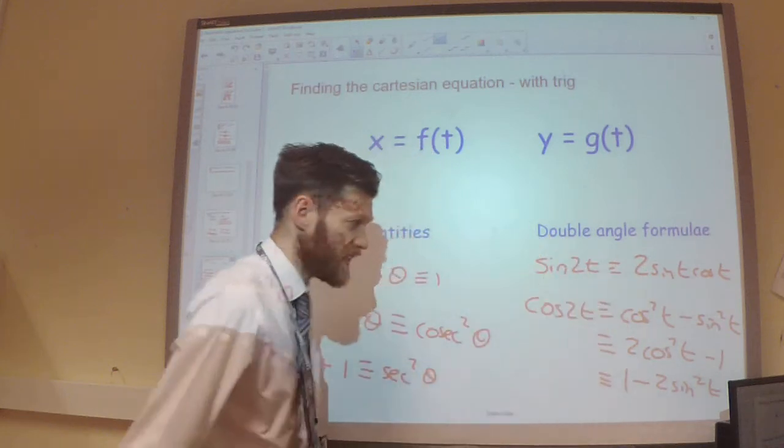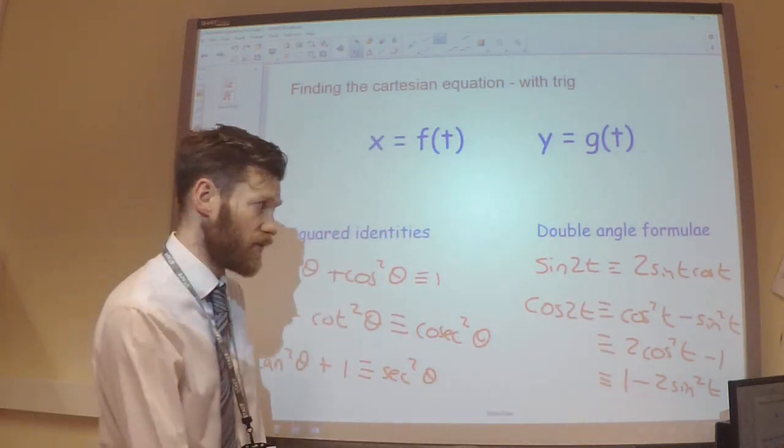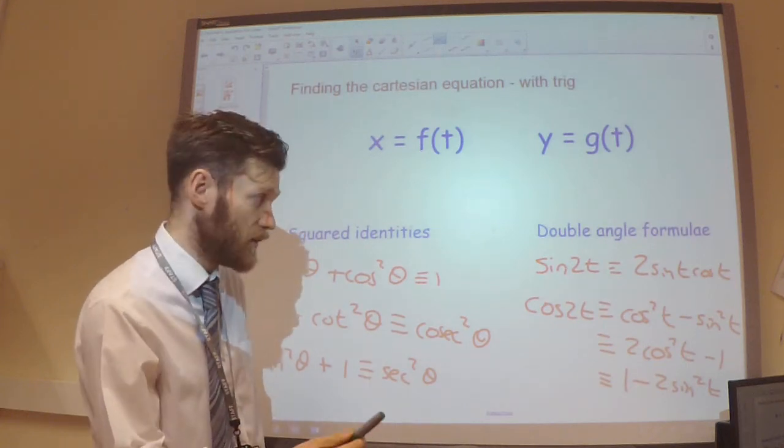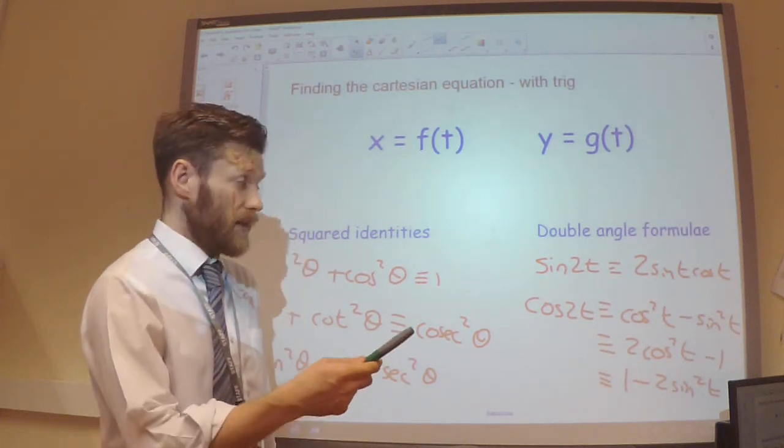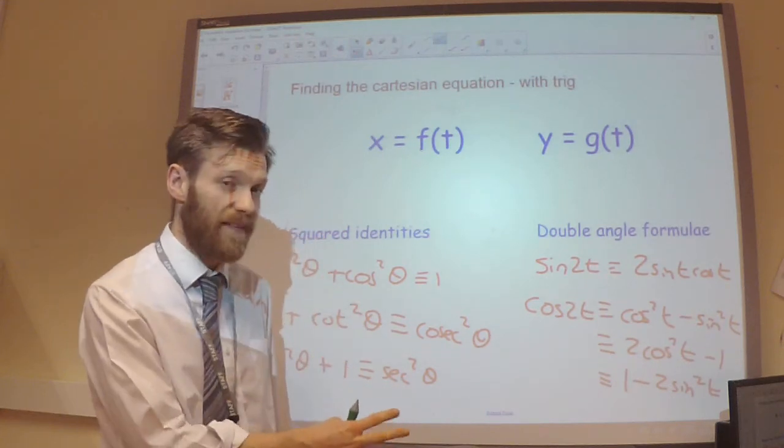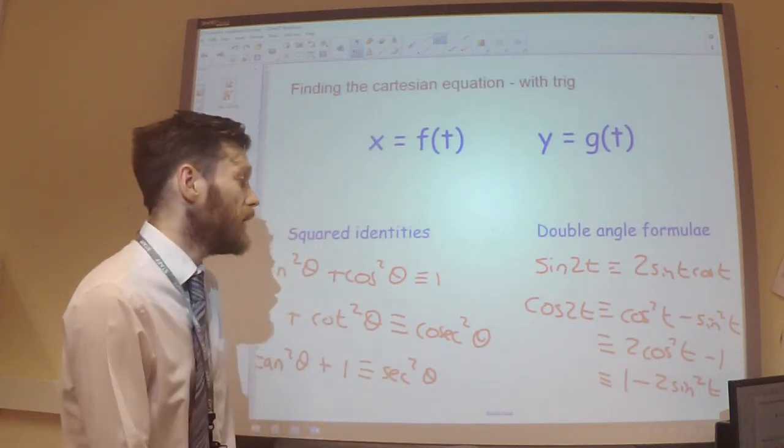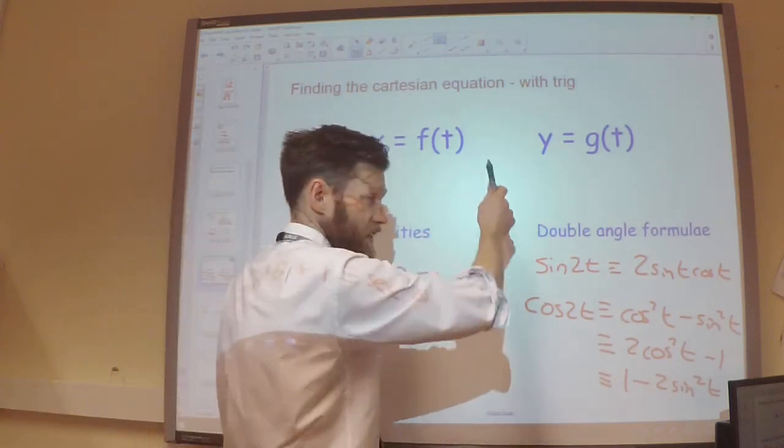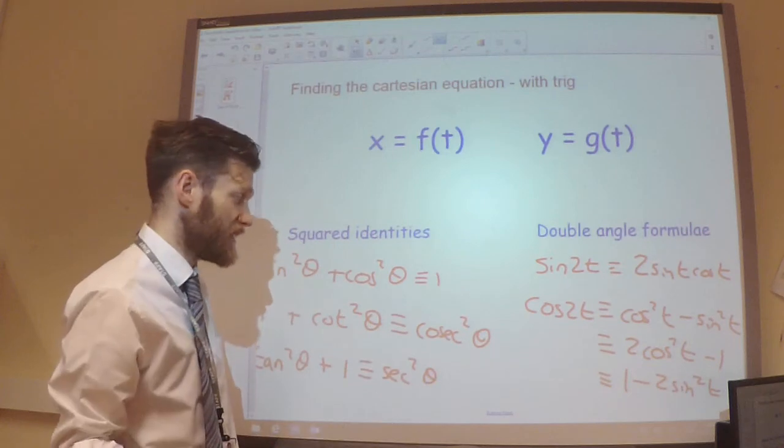So we've seen these identities loads now. We've worked on them quite a lot in terms of proving identities and in terms of using them for integration. So you should hopefully be very familiar with these by now. But we can also use them to help us to link these two equations together to eliminate the t.